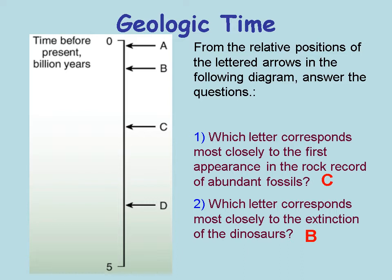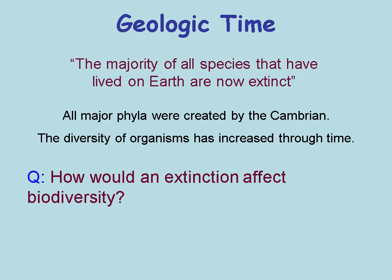Letter A might apply to something like the creation of mastodons or mammoths. One interesting thing to think about is that even though all major phyla were created by the Cambrian, most all species on Earth have gone extinct, and God has created new species over time. The diversity of organisms has increased through time, so we have many more species now than earlier in Earth history. Basically, the model or the kinds of animals and plants were established at the Cambrian.